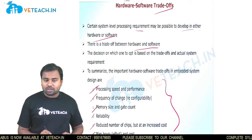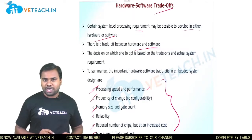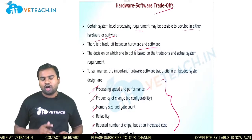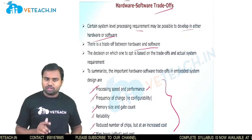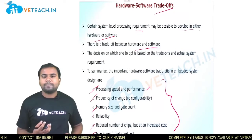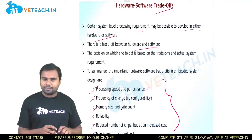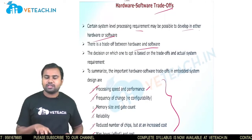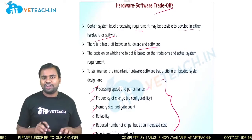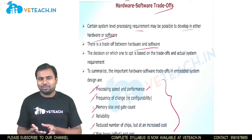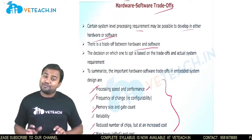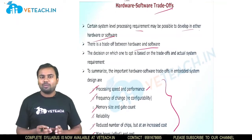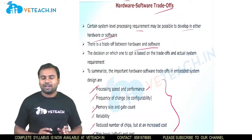For processing speed and performance, it must be high and compatible with the software programming. Hardware and software must be compatible to develop the best processing time and performance. Reconfigurability must also be present in the hardware-software trade-off — if there is no reconfigurability and you want to change the program, you need to change the entire system. With reconfigurability, you can change just one component.